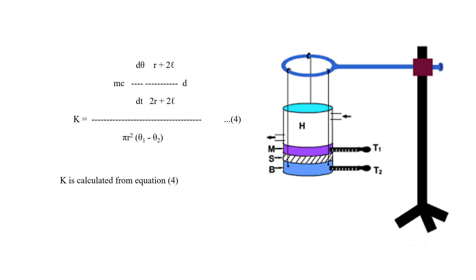The experiment is shown once again in the diagram. The brass disc is connected in the apparatus, and steam is passed through the steam chamber so heat is conducted through to the nearest chamber. The bad conductor B of the same diameter is placed between. The upper temperature theta-1 and lower temperature theta-2 are noted at steady state, then the bad conductor is removed to conduct the cooling experiment.